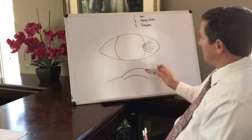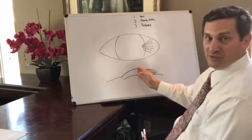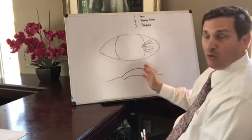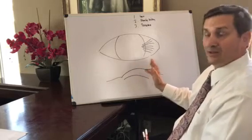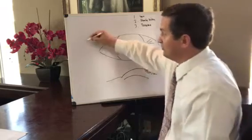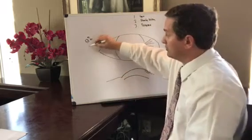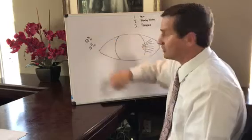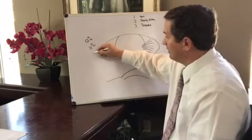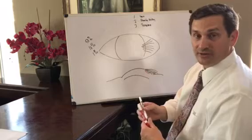Years ago, the recommendation was not to take off the pterygium until it reached almost the center of the cornea. And the reason was because the recurrence rate used to be 50%. Now, the recurrence rate using advanced techniques is about 10%. In our practice, it's about 1%.